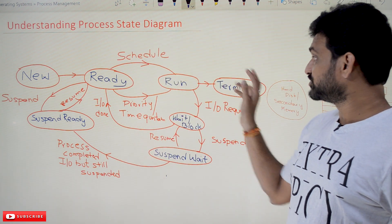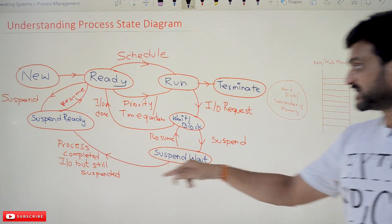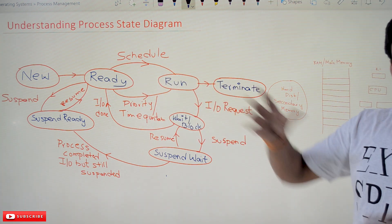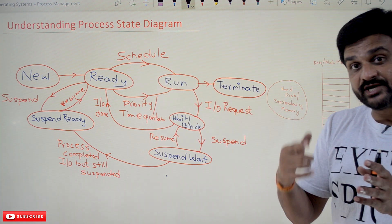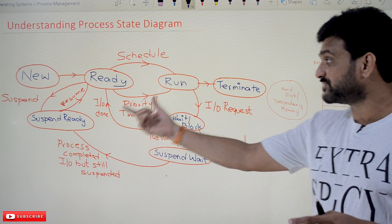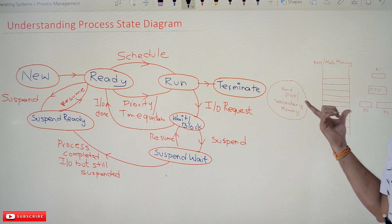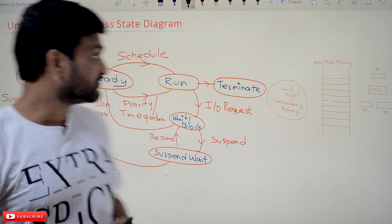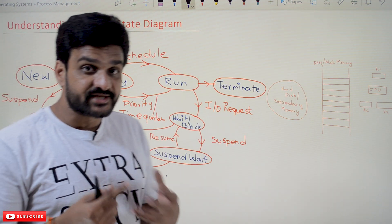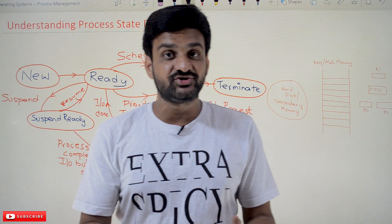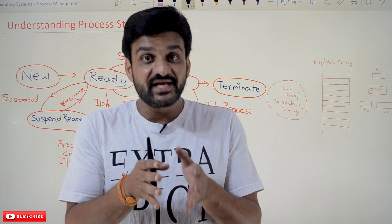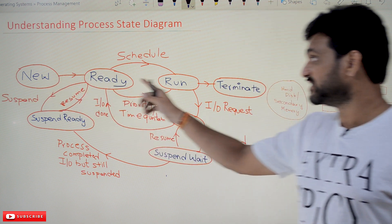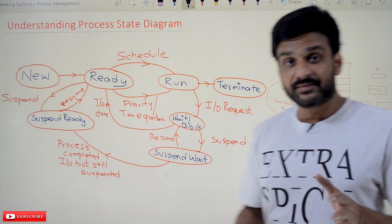Now, what is this process state diagram? This is what we call the process state diagram. First we will try to understand this diagram, and after that we will take a real world example to understand it — which is the diagram we've been using for the previous four to five videos. Whenever a process or program is getting executed, it will be in any one of seven different states.